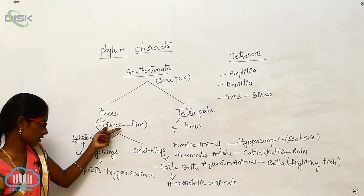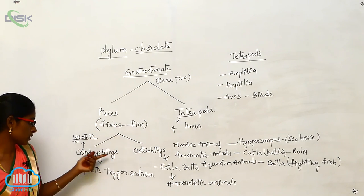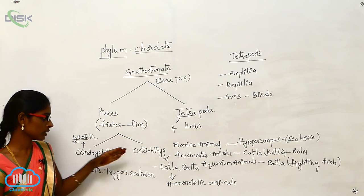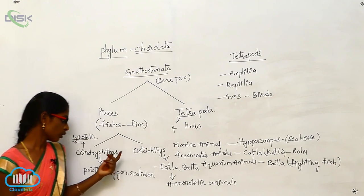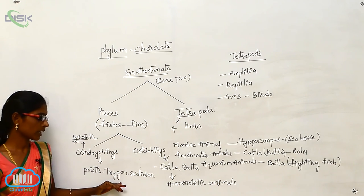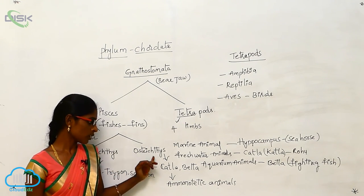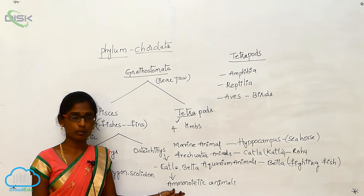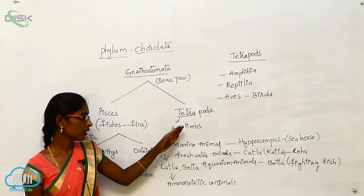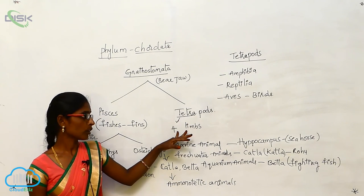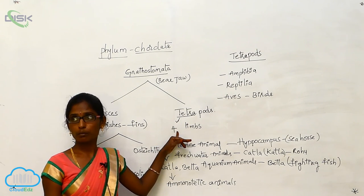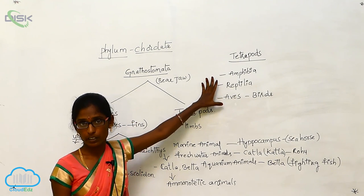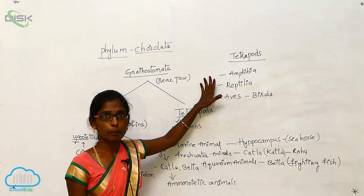Pisces includes fishes with fins, divided into Chondrichthyes — Pristis, Trigon, Scoliodon — and Osteichthyes — Catla — which are ammonotelic organisms. Tetrapods have four limbs, including Amphibia, Reptilia, and Aves, where Aves is also called birds.